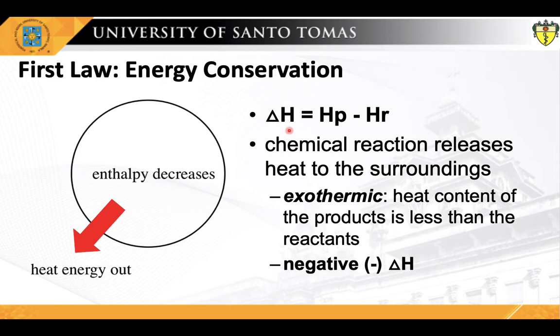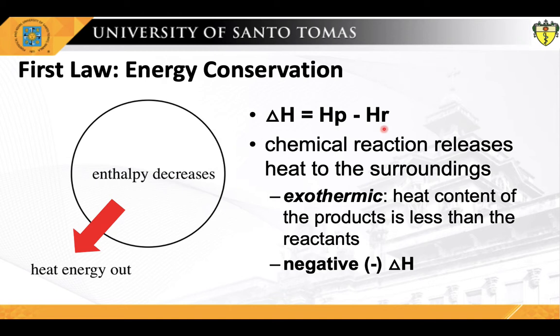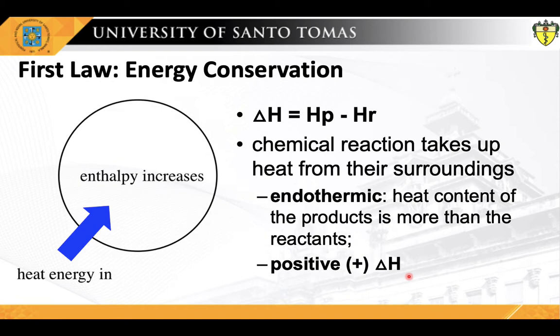Change in enthalpy is measured as the difference in the energy content or enthalpy of the products in relation to the reactants. Delta H is computed as the enthalpy of the products minus the enthalpy of the reactants. When a chemical reaction releases heat, it is said to be exothermic. The heat content of the products is less than that of the reactants, and thus delta H has a negative value. On the other hand, when reacting systems take up heat from their surroundings, these reactions are considered endothermic and have positive values of delta H. This means the heat content of the products is more than the heat content of the reactants.